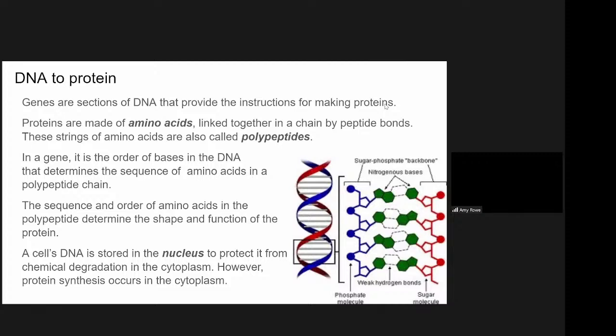Okay. So just to recap, genes are sections of DNA that provide the instructions for making proteins. So we say that the level one definition would be that they are sections of DNA that code for a trait or a characteristic. But at level two, we want to go a little bit deeper than that. And we say that they provide the instructions for making a protein. And as I mentioned before, proteins are made of amino acids linked together in a chain by peptide bonds to form a polypeptide chain. In our genes, it's the order of the bases in the DNA sequence that determines the sequence of amino acids that get put together in our polypeptide chain. And the order and sequence of those amino acids determines the shape and function of the protein. Remember, we're dealing with chemicals here. So there's not a whole lot of engineering that goes into it. So making sure that the sequence of amino acids is correct in our polypeptide chain is vital to making sure the protein is going to fold up into the correct shape to be functional.